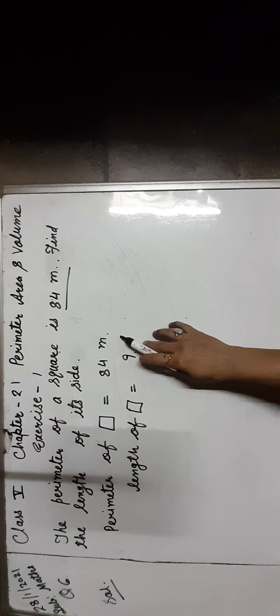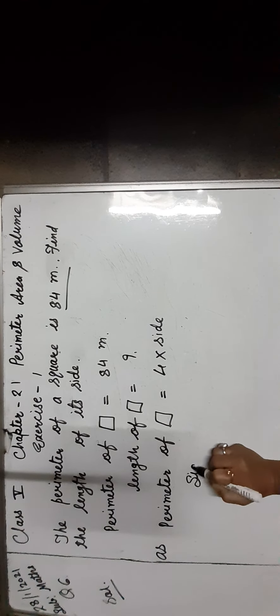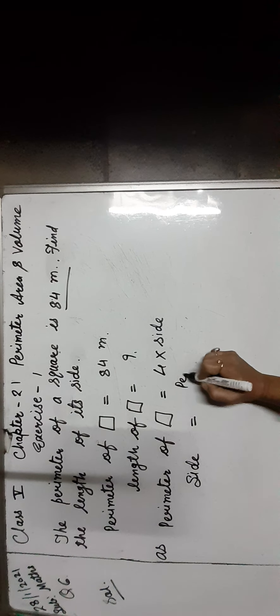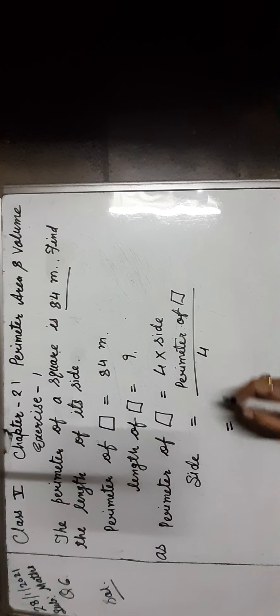Here the information is given: perimeter of a square is equal to 84 meters. As we know, perimeter of a square is equal to 4 into side. Then side is equal to perimeter of square upon 4. Putting the value, side is equal to 84 meters upon 4, which is equal to 21 meters.